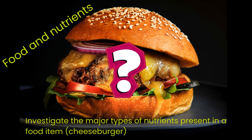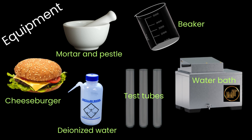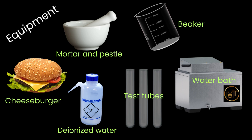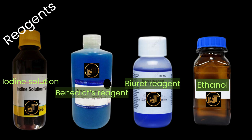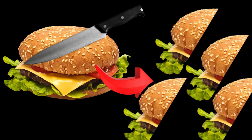Imagine your class is learning about food and nutrients, and your teacher gives you a challenge: investigate the major types of nutrients present in a food item — let's say a cheeseburger. To carry out this investigation, your lab technician provides the following equipment and reagents: a cheeseburger, a mortar and pestle, deionized water, glassware like beakers and test tubes, a water bath, and reagents such as iodine solution, Benedict's reagent, Biuret reagent, and ethanol.